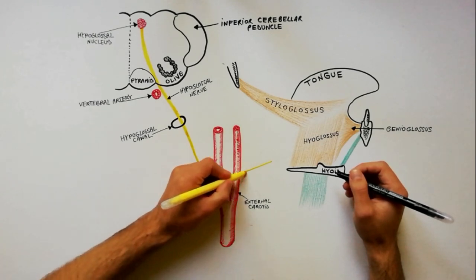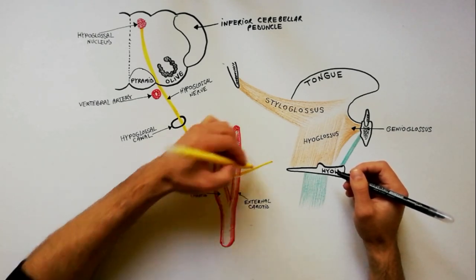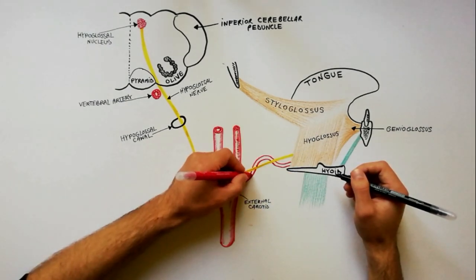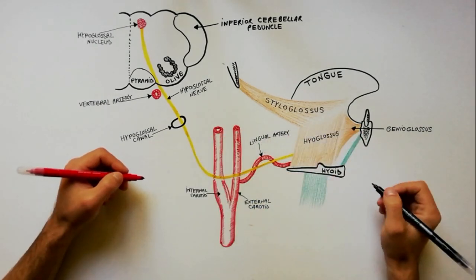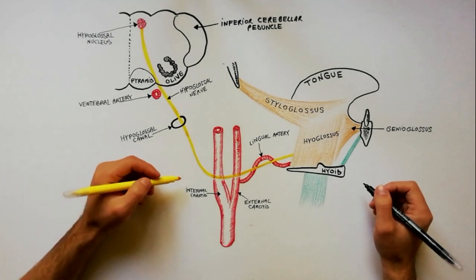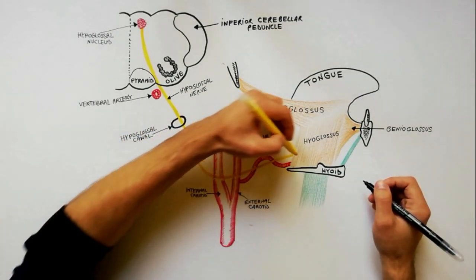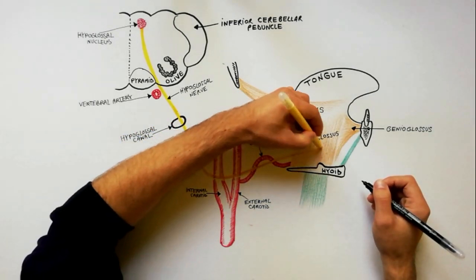Crossing in front of the internal and external carotid arteries and the loop of the first part of lingual artery to reach the posterior margin of the hyoglossus muscle. Now it runs on the superficial surface of the hyoglossus.